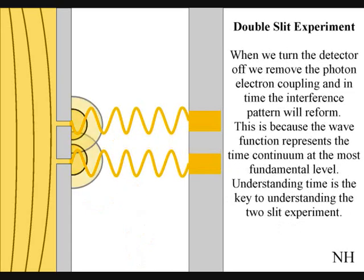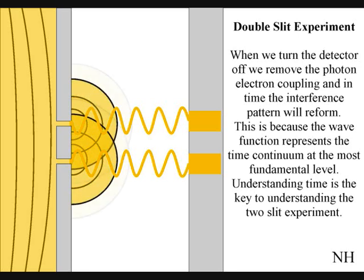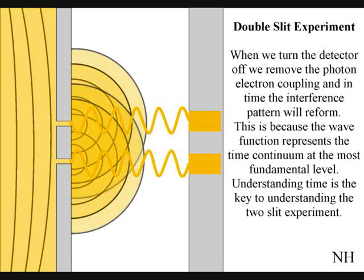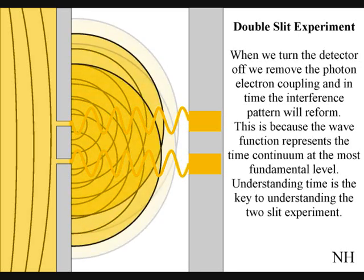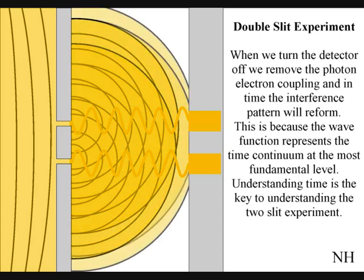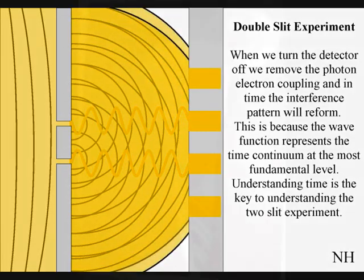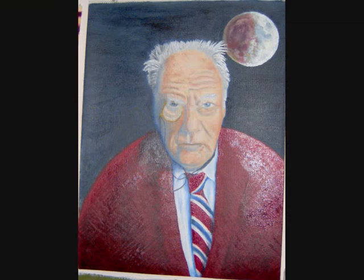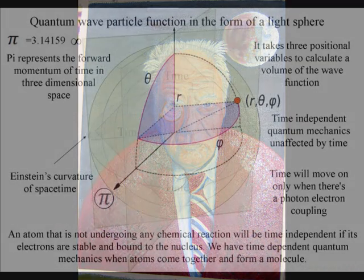If we turn the detector off, we remove the photon-electron coupling, and in time, the interference pattern will reform. Just like in Newton's first law of motion, the interference pattern will continue to maintain its state unless acted upon by an external force.